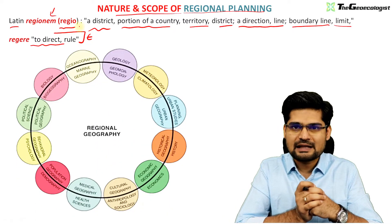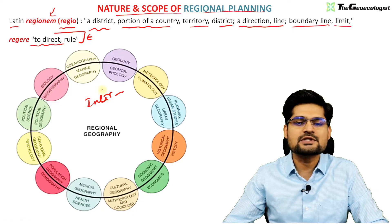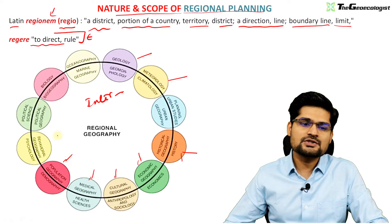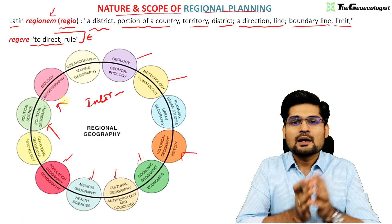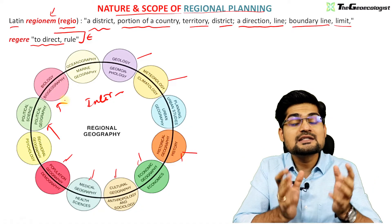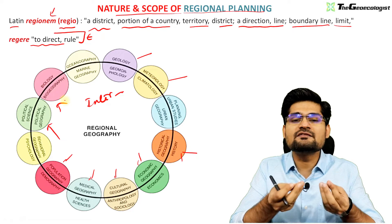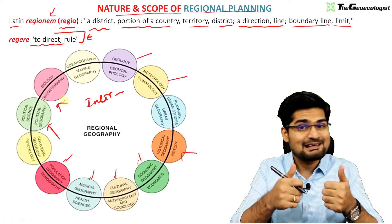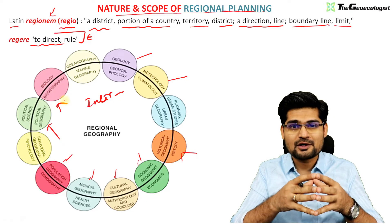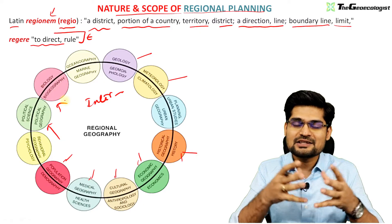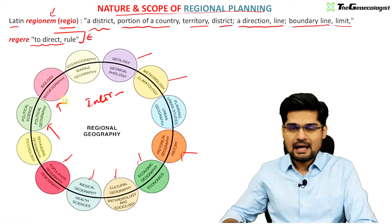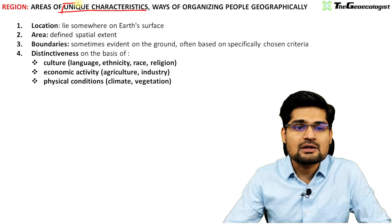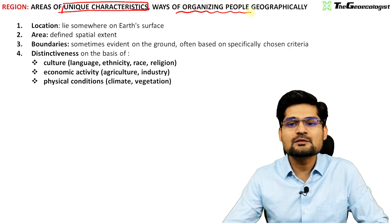Regional planning is an interdisciplinary subject — geography, economy, culture, medicine, population, behavioral science, political science, biogeography, and several other branches come together to form it. Region itself is a concept related to space and scale, defined in terms of location, area, boundaries, and scale — local, meso, macro, national, or district level. Regions are areas of unique characteristics, ways of organizing people geographically.